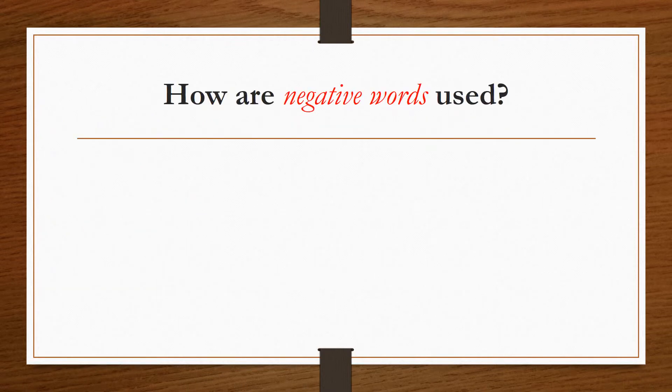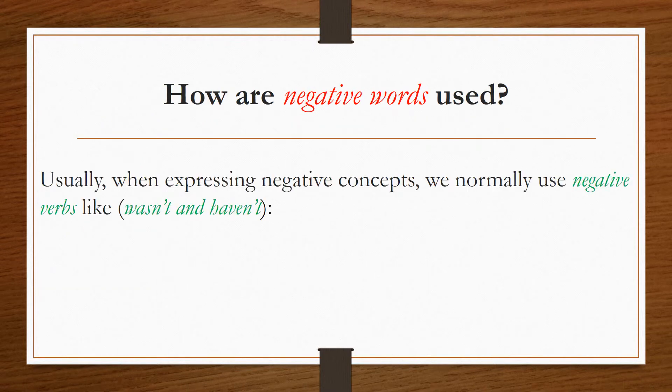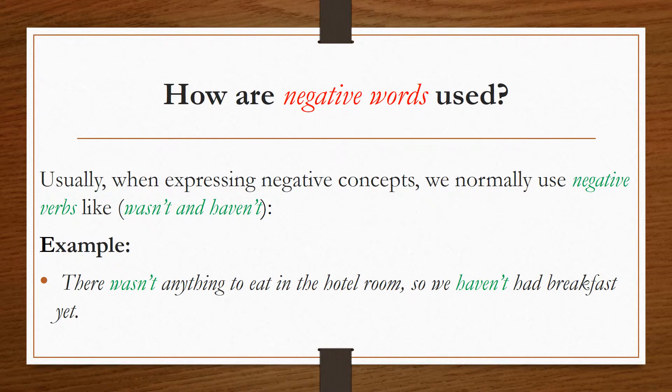How are negative words used? Usually, when expressing negative concepts, we normally use negative verbs like wasn't and haven't. For example, there wasn't anything to eat in the hotel room, so we haven't had breakfast yet.